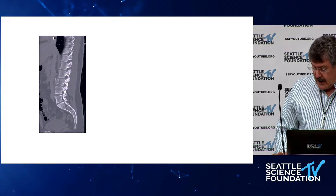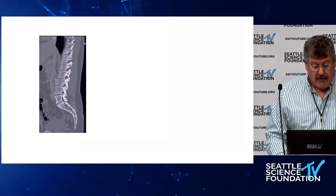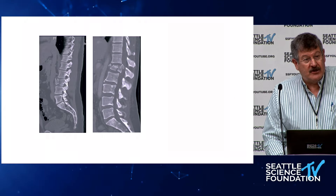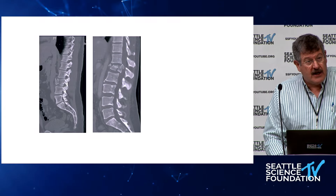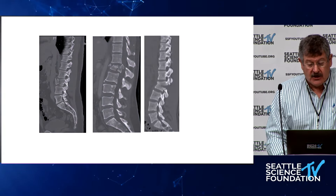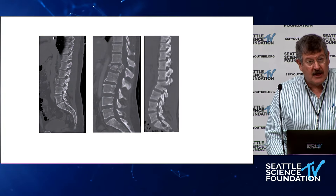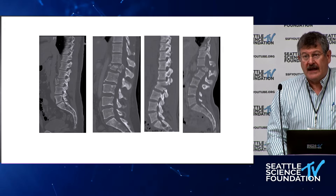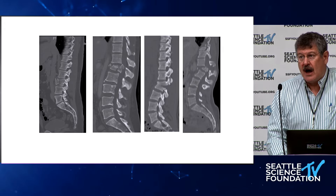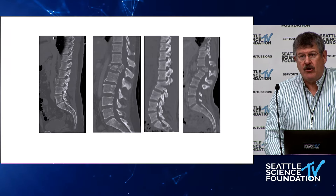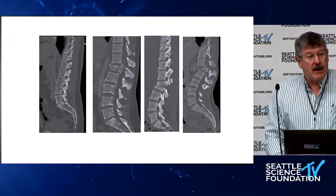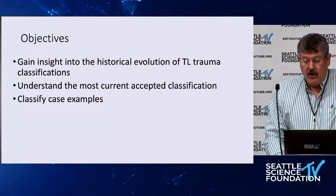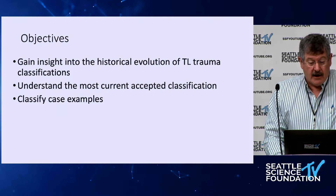If you look at different thoracolumbar fractures, this fracture is not the same as this one. They're treated differently and called different things. They're all thoracolumbar fractures, but we need to be able to communicate what they are because they're all treated differently.